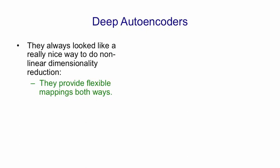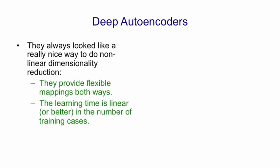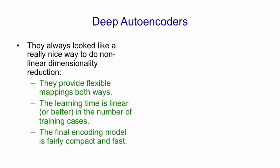They provide flexible mappings in both directions, and the mappings can be non-linear. Their learning time should be linear or better in the number of training cases, and after they've been learned, the encoding part of the network is fairly fast, because it's just a matrix multiply for each layer.